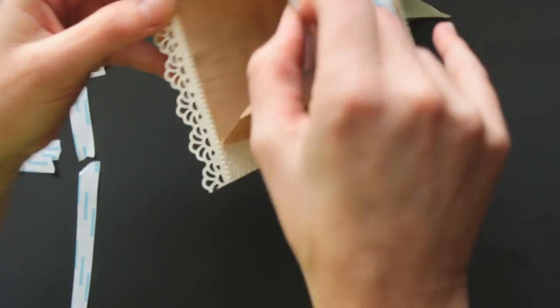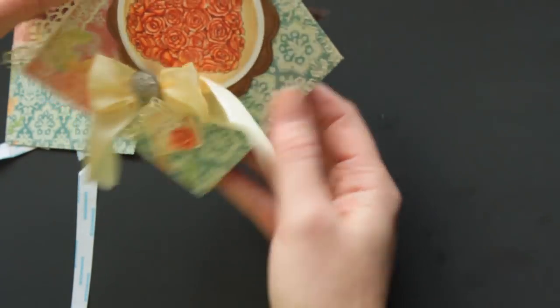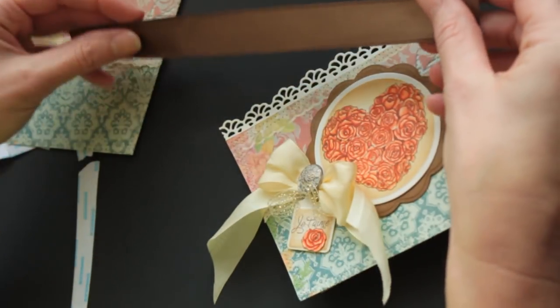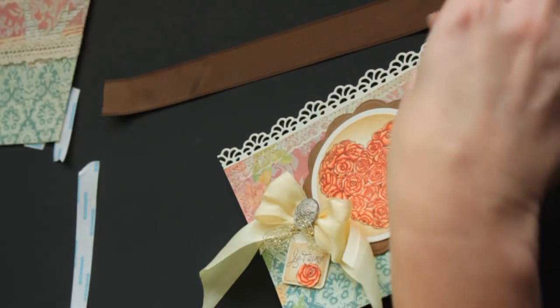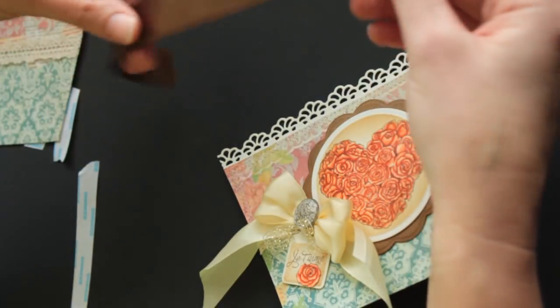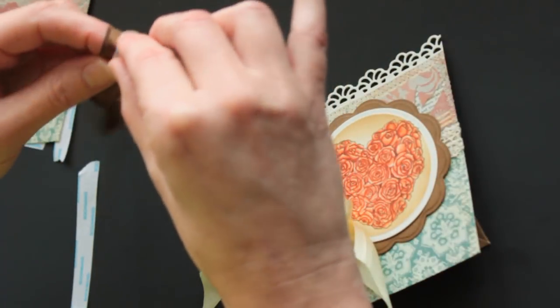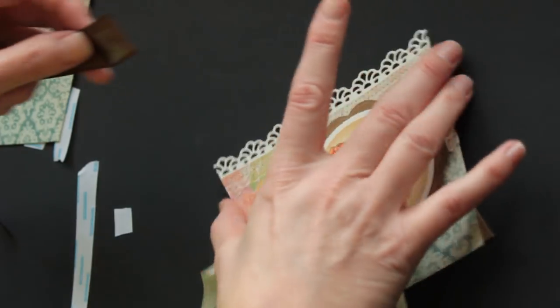I forgot one more thing, but we can do it on the back. No, we can do it on both. If you want handles, you could just leave it like this, but if you want handles, cut some ribbon. Mine is 9 inches long. Add adhesive on each side.